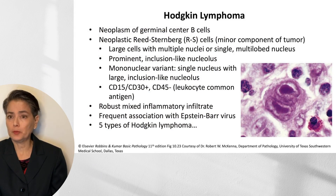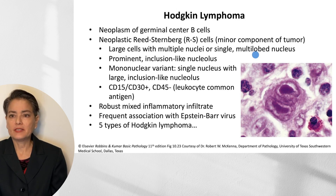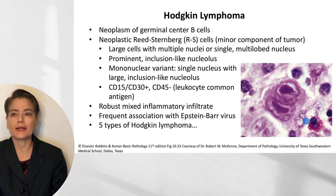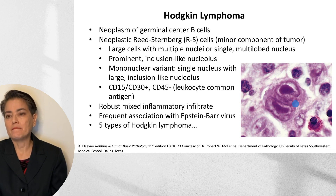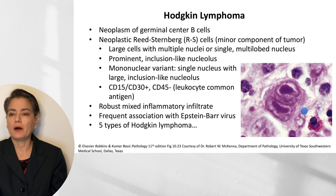Hodgkin lymphomas are neoplasms of germinal center B cells, and the cell we're focused on is the Reed-Sternberg cell, which is only a minor component of the tumor. The Reed-Sternberg cell is a fairly large cell that can either have multiple nuclei, a single multi-lobed nucleus, or just one single nucleus. Both forms have inclusion-like nucleoli. The classic Reed-Sternberg cell has a mirror-image appearance, sometimes referred to as owl eyes. The immunophenotype is unusual: these cells are positive for CD15 and CD30, and negative for CD45, our leukocyte common antigen.